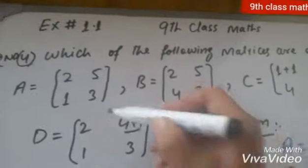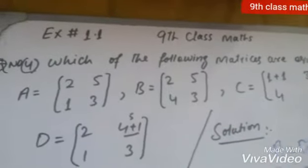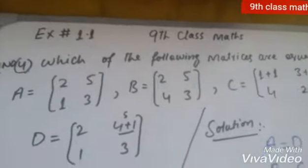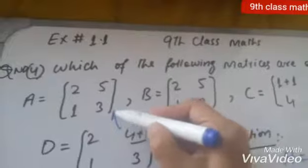So the matrix A and matrix D are equal. Matrix A and matrix D are equal.